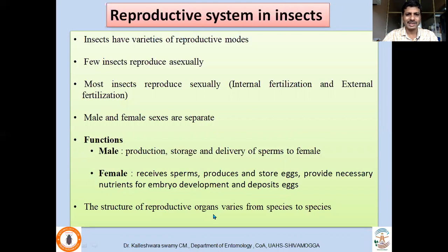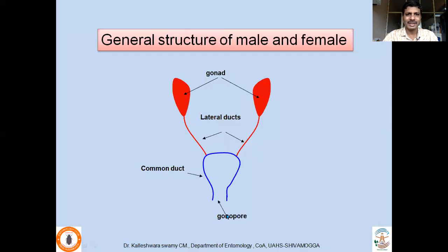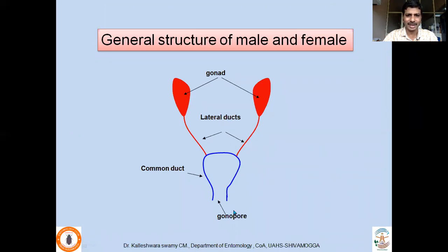The structure of reproductive organs varies from species to species. However, in general, whether male or female, it consists of a pair of gonads where eggs or sperms are synthesized, collected through a lateral duct, and then exit through a common duct — either an oviduct or ejaculatory duct — into the aedeagus in males or the ovipositor in females.